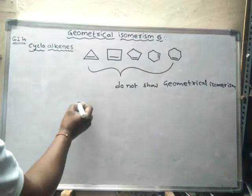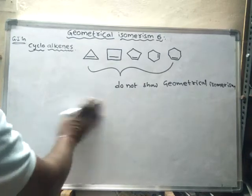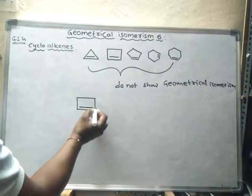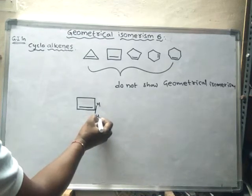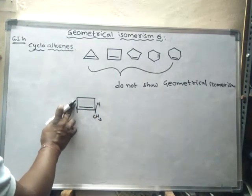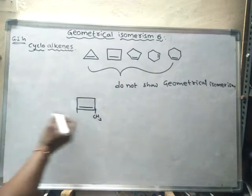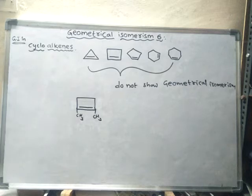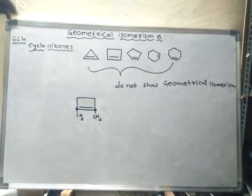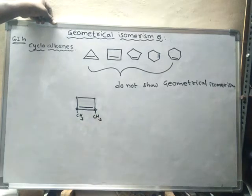Let us see an example. Consider a cycloalkene with a double bond — one carbon has a hydrogen and a methyl group. There are already four bonds present, and both carbons involved in the double bond are sp2 hybridized.